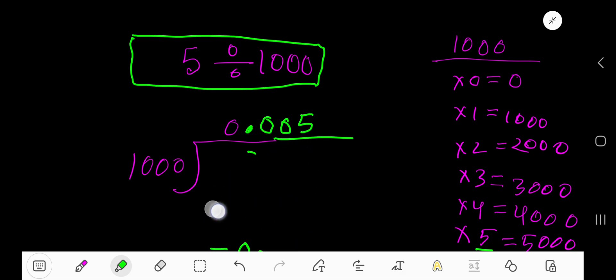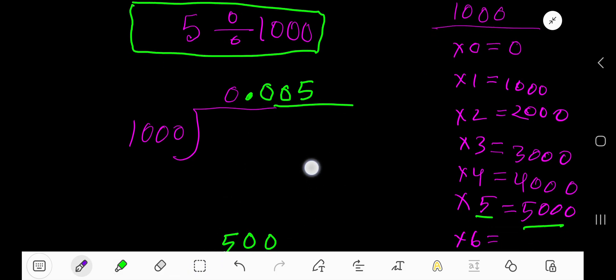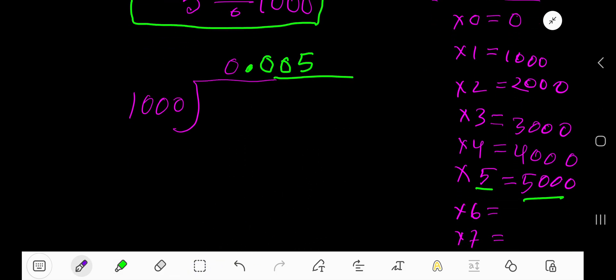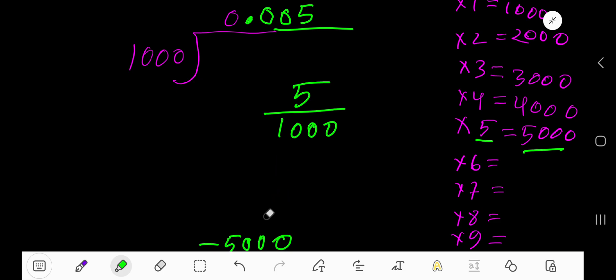Let me show you another method to find this result. This method is easier. 5 divided by 1,000. If you get a fraction where the denominator starts with 10, like 10, 100, 1,000, or 10,000 – that is, after 1 you have just zeros.